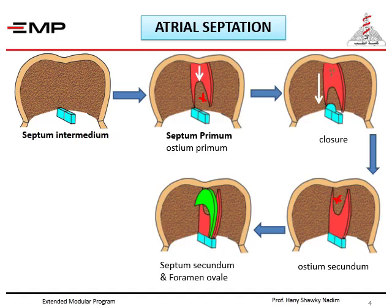On the right side of the septum primum, another septum descends. It is also crescentic, descending from the roof and from the anterior aspect of the common atrium. It is called septum secundum. It is thicker than the septum primum, and the opening below it is called the foramen ovale — this foramen ovale never closes. The two horns of the septum secundum: the anterior horn reaches the septum intermedium, however the posterior horn is separated by a gap from the septum intermedium.